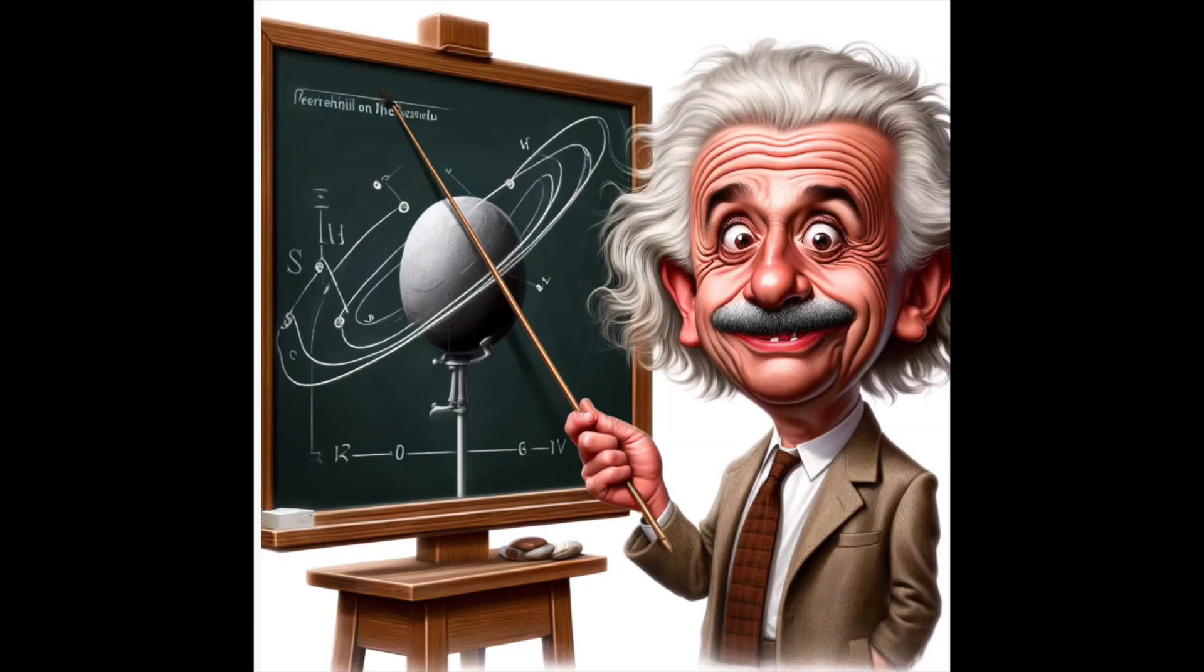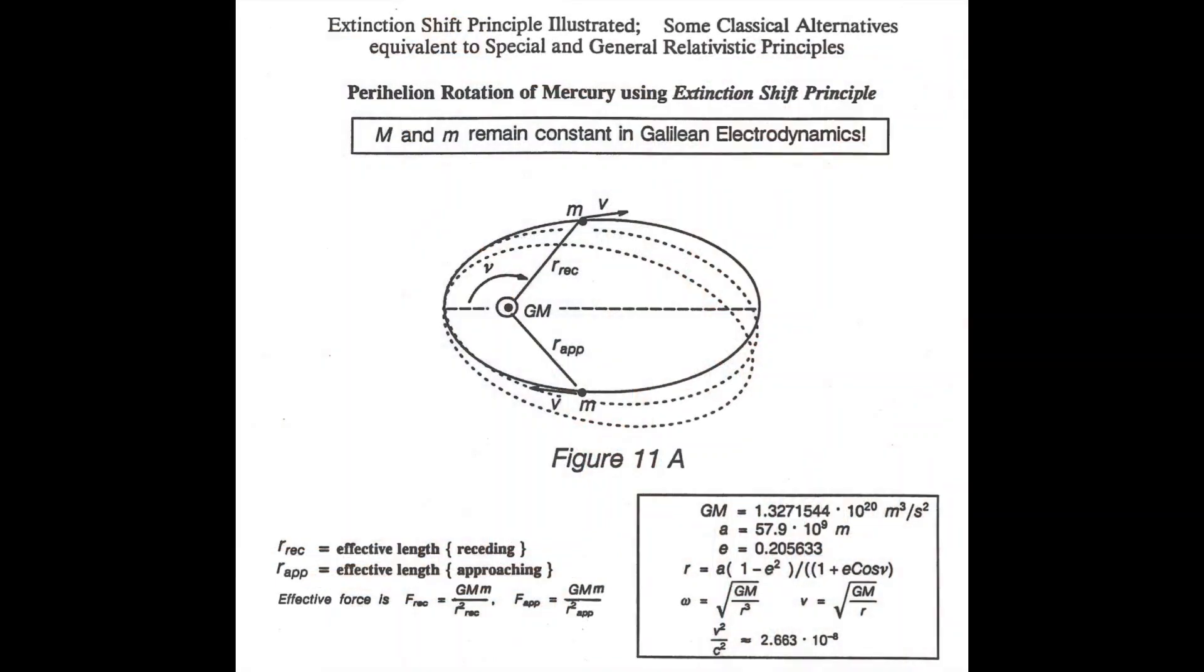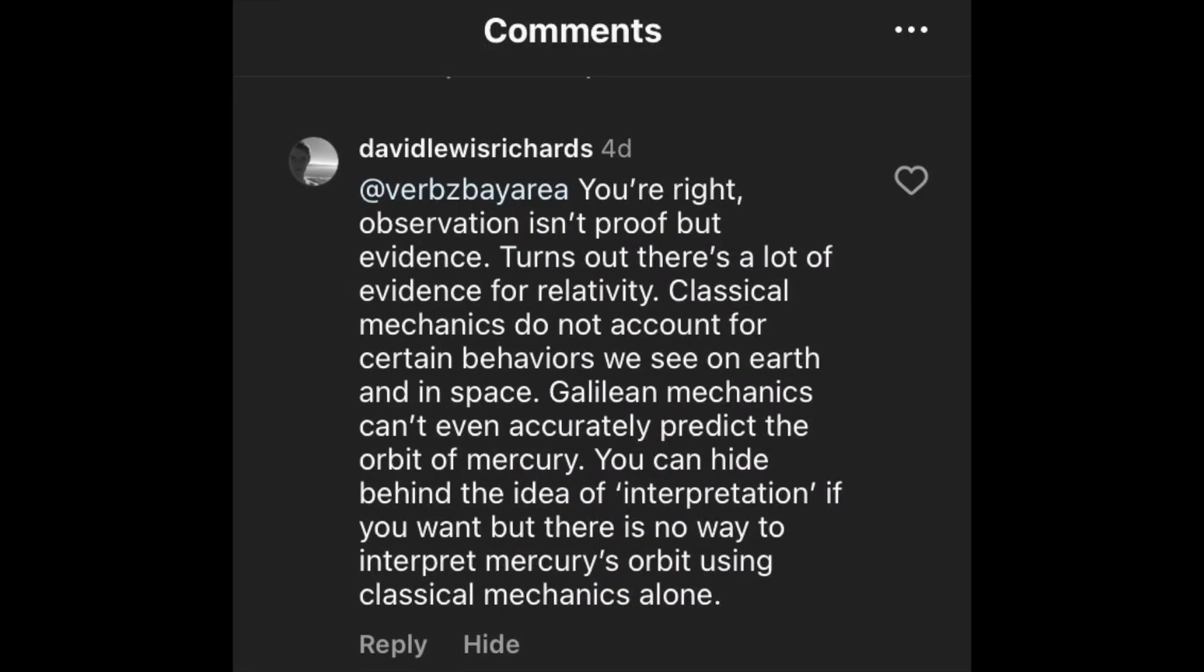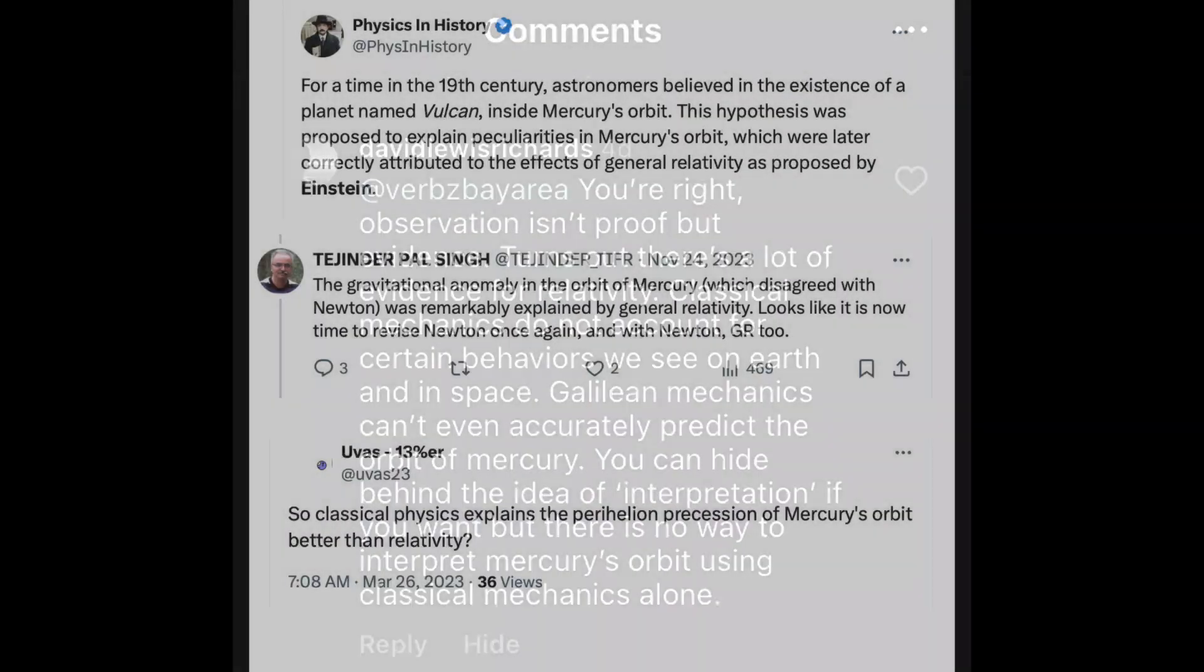This video addresses the claim that relativity is the only method that can predict and solve the perihelion of Mercury. Here are some comments from a few people on different platforms, where I've had these same conversations daily for many years.